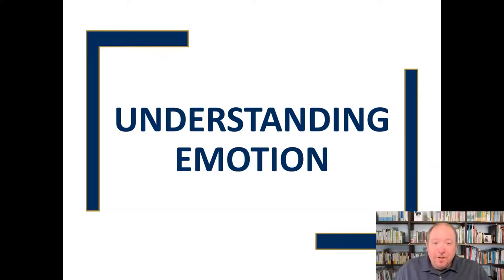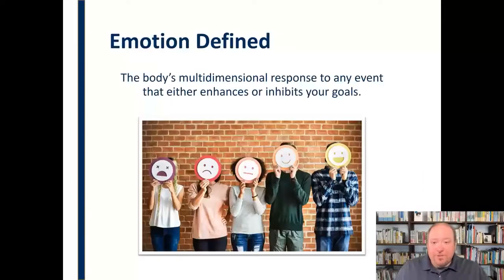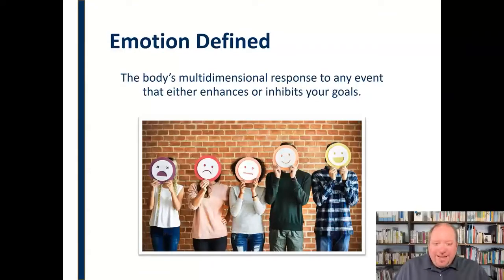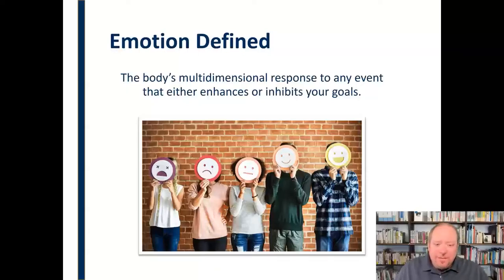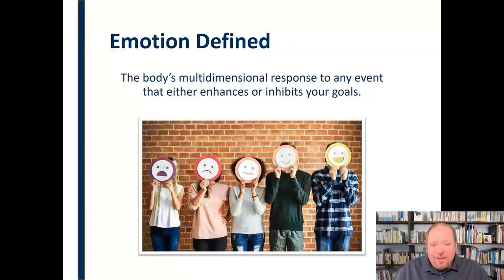So I want to take a moment to look at how we can understand emotion more effectively — what it is, how it works, how it operates, what's the nature of emotion. Starting with the definition: emotion is the body's multi-dimensional response to any event that either enhances or inhibits your goals. There's a lot to unpack there. We're going to look at what it means to be multi-dimensional, to be in response to an event, and to enhance or inhibit your goals.